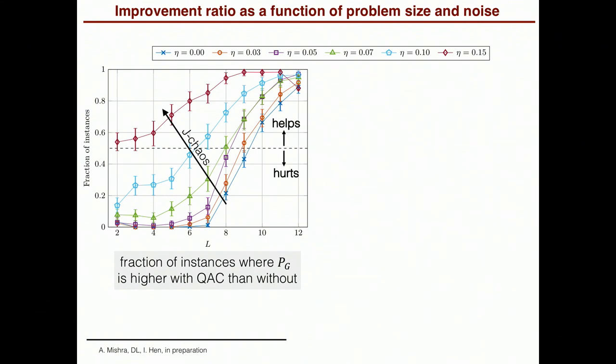And so this is the fraction as a function of size for different levels of noise with J-Chaos increasing along this direction. And you see that for low levels of noise where the J-Chaos effect is weak, up to size seven, it doesn't help very much. And then it starts to help. And for very high levels of noise, quantum annealing correction helps from the very beginning. It always is better to do it than not to do it.